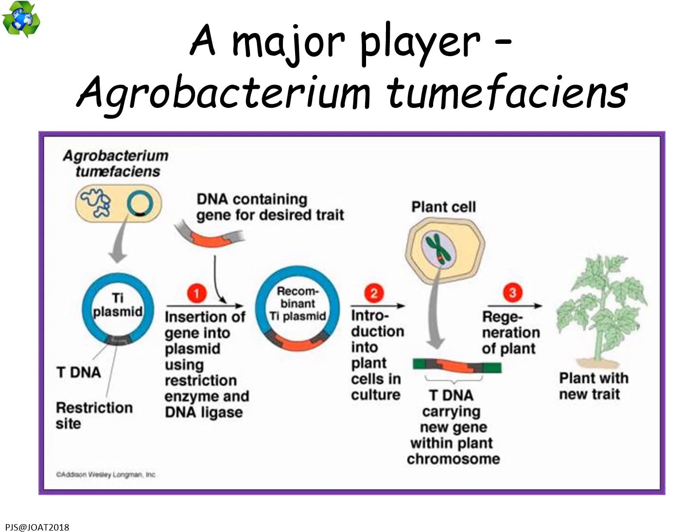The big player here is Agrobacterium tumefaciens, a soil bacterium that normally creates crown galls on plants — it attacks plants and forms tumors. These tumors are created by a set of instructions on the Ti plasmid (Ti stands for tumor-inducing) inside the bacteria. What has been discovered is that you can take this Ti plasmid, use it like a normal plasmid, insert the DNA you want to introduce, and then use that Ti plasmid to get into plant cells.